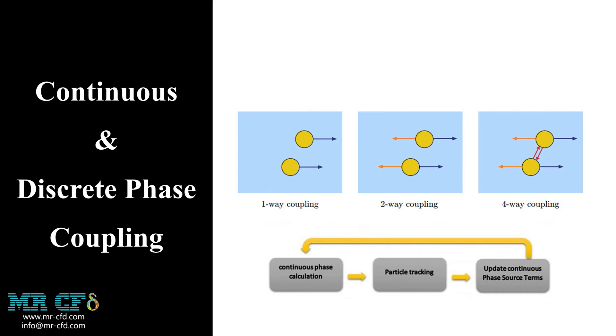The above chart is the general form of solving a two-way DPM problem. First, the continuous phase is solved by the Eulerian view. Next, the discrete phase is calculated to track each particle and find its new position. Then, the interactions are applied in the continuous phase equation via source terms. The process is repeated and the source term updates until it reaches convergence.